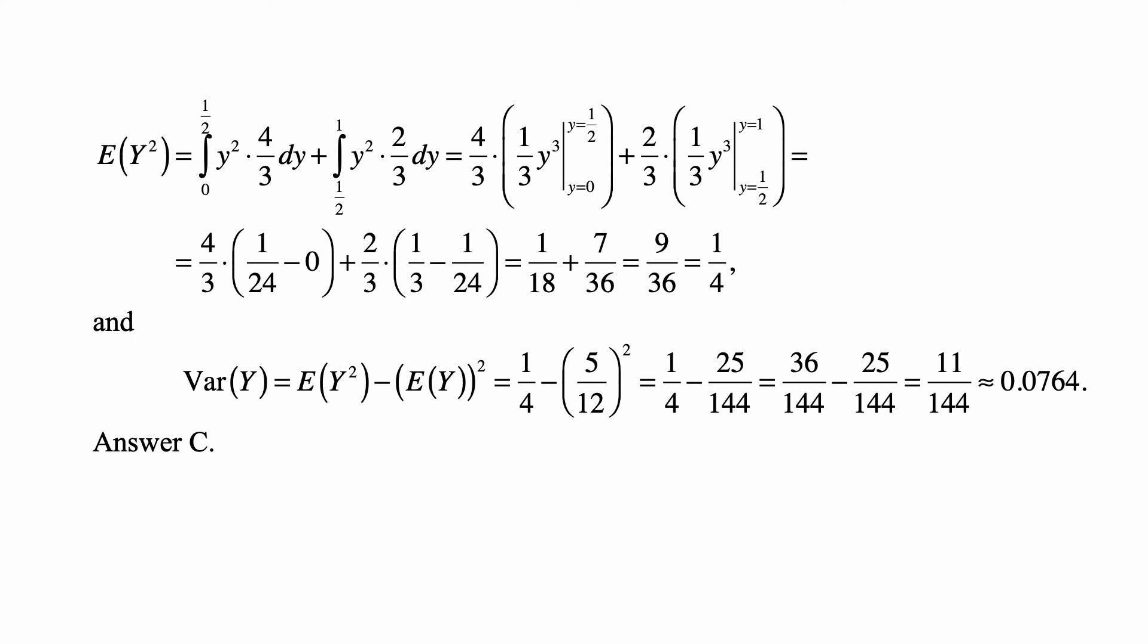And the variance of Y is the second moment minus the square of the first moment. So it's 1/4 minus (5/12) squared, or 1/4 minus 25/144, or 36/144 minus 25/144, and that's 11/144, or approximately 0.0764, which is answer C.